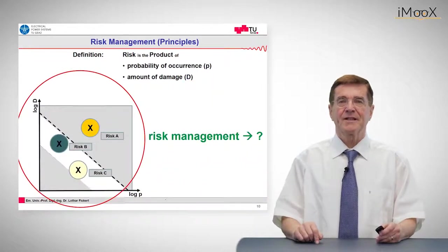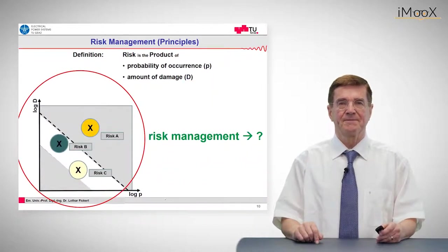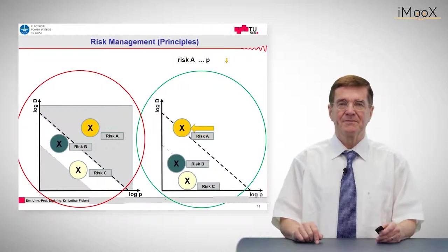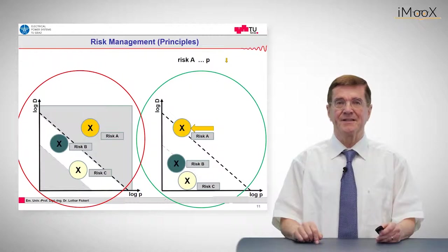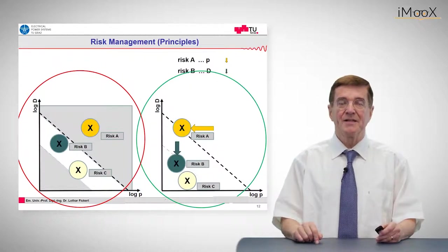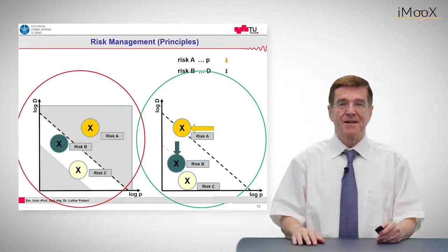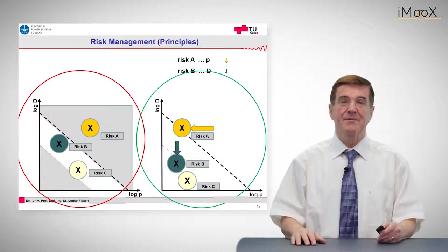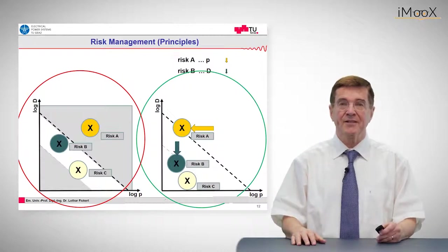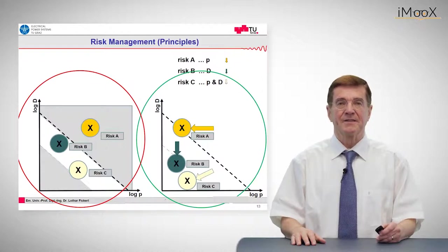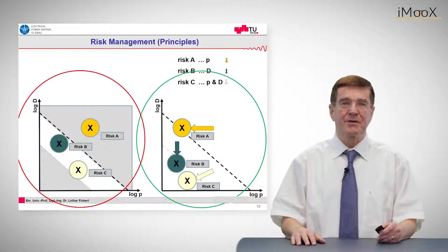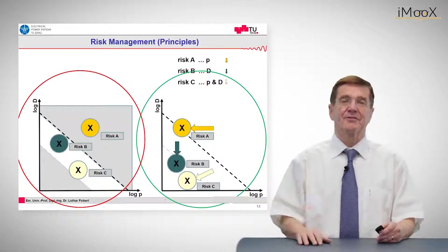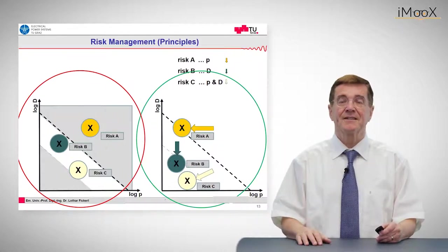So what can risk management do? Risk management can reduce the probability with constant damage, shown by the yellow arrow. It can also reduce the damage with the same probability of occurrence. And of course it can do both - reduce the probability and the damage - and then the point moves right down to the center, which is advantageous.